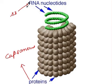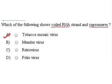So, out of the four, TMV is the one which has coiled RNA as its genetic material, and proteins — or capsomeres — making up the capsid.